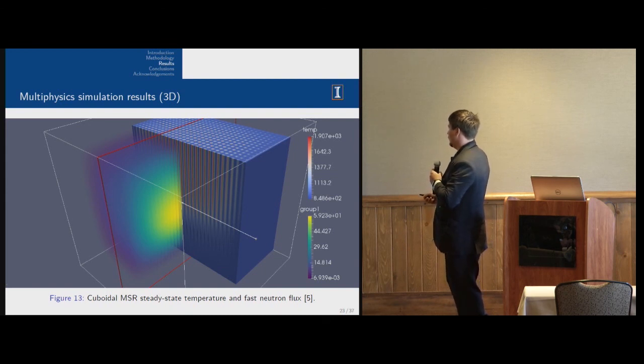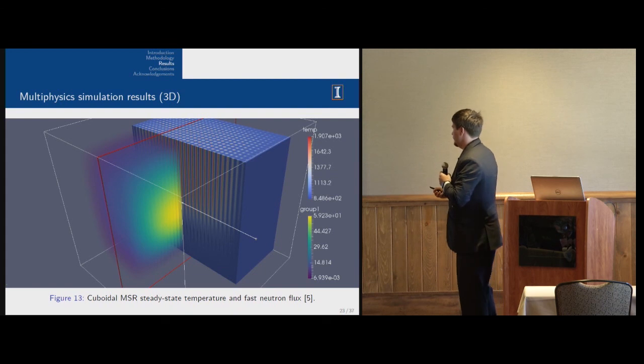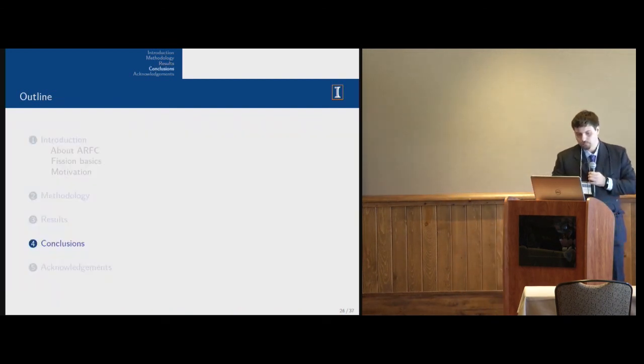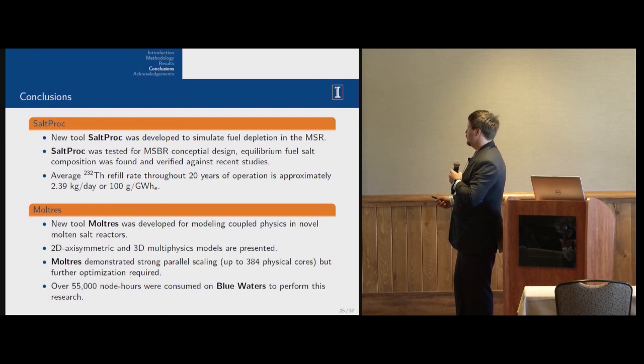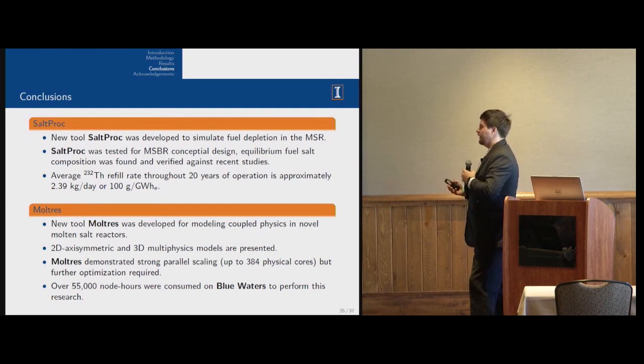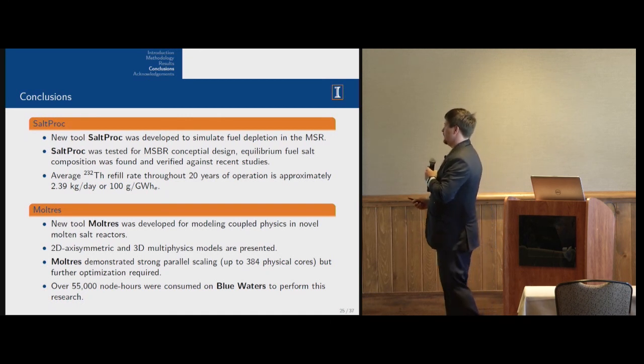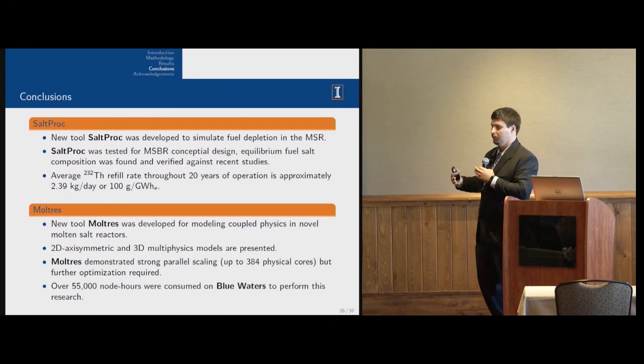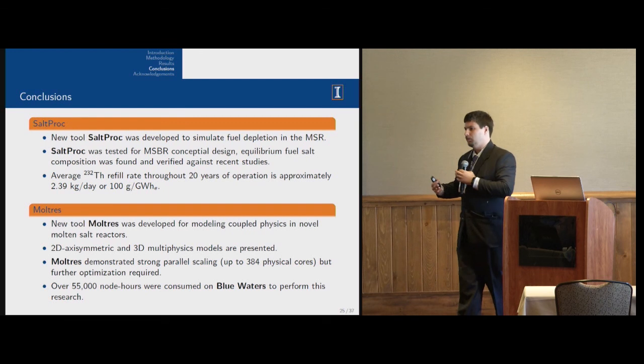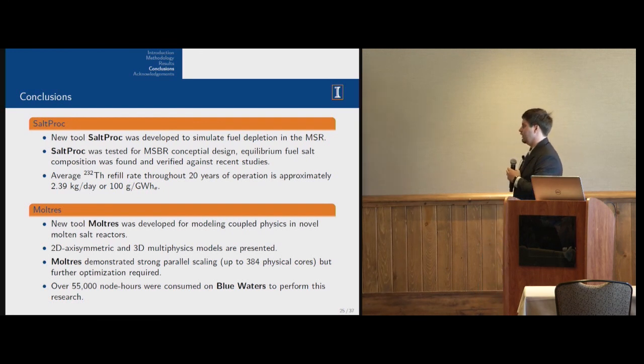And again, as you can see, fast flux is maximum in the center of this model and temperature is highest in the top of the channels. To conclude, we have developed two tools. Saltproc tool will allow us in the future to simulate and analyze fuel performance for liquid fuel at molten salt reactors. We tested it on molten salt breeder reactor conceptual design and verified it against most recent Oak Ridge National Laboratory studies. They used unit cell models and deterministic codes, but we had a nice agreement with them. An interesting finding is that thorium consumption is only 100 grams per gigawatt hour electric.